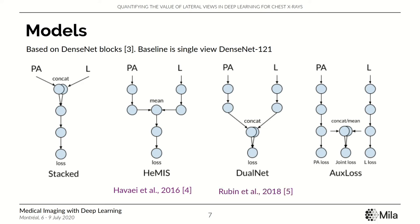The third is Dual-Net. In this model, each view has its own independent network, but the output of the respective pooling layers is concatenated before being given as input to the classification layer. We propose a modification of this model where we add specific classification layers for each view and optimize all the losses jointly.